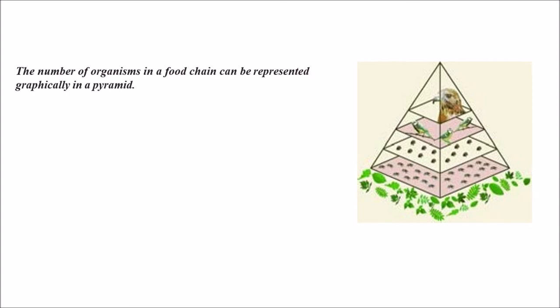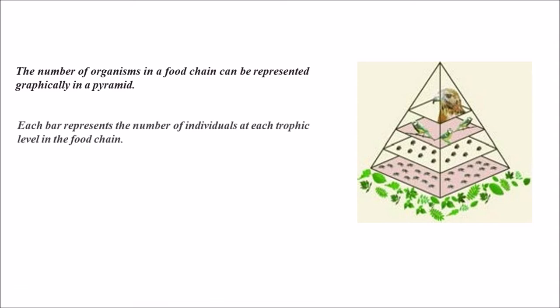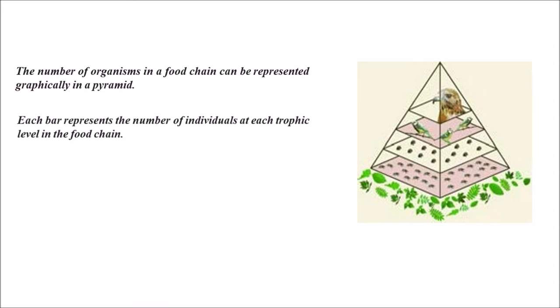The number of organisms in a food chain can be represented graphically in a pyramid shape. Each bar represents the number of individuals at each trophic level in the food chain — that is the role of the bars at each trophic level in the food chain.